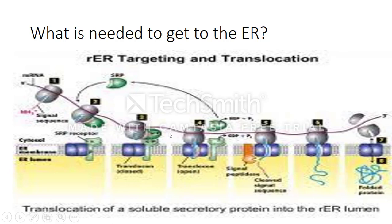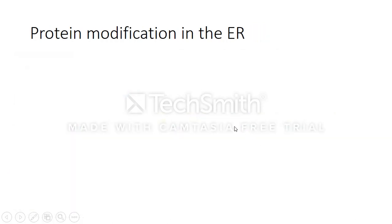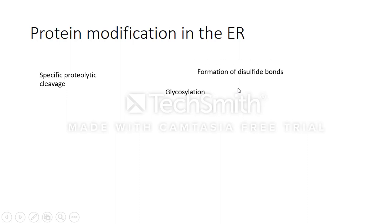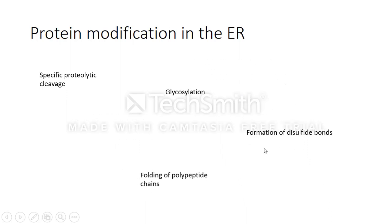The translocon then allows translation to continue. The protein comes through, translation continues to the stop codon, and the protein then folds in the lumen with the help of chaperone proteins. Regarding protein modification in the ER: once the mRNA sequence is targeted to the ER and the protein begins to fold, we get specific proteolytic cleavage, glycosylation, formation of disulfide bonds, and folding of polypeptide chains.